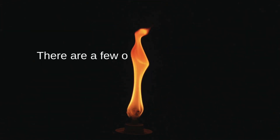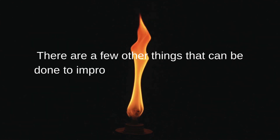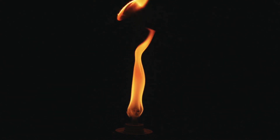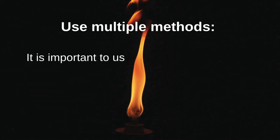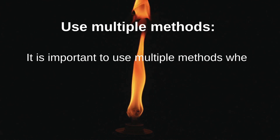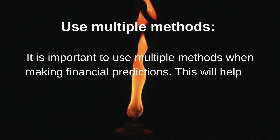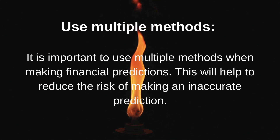There are a few other things that can be done to improve the accuracy of financial predictions. Use multiple methods — it is important to use multiple methods when making financial predictions, as this will help to reduce the risk of making an inaccurate prediction.